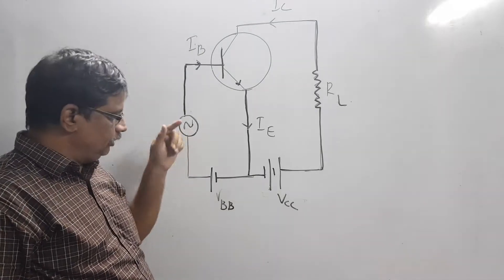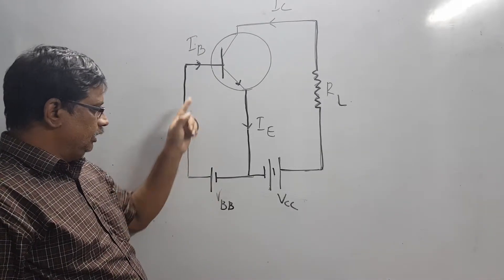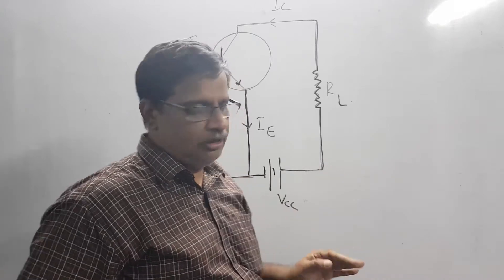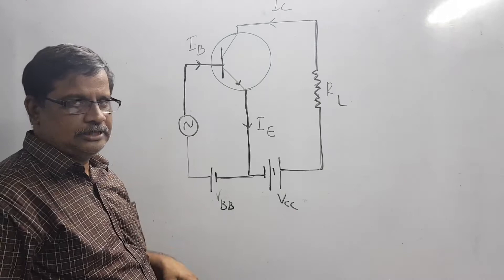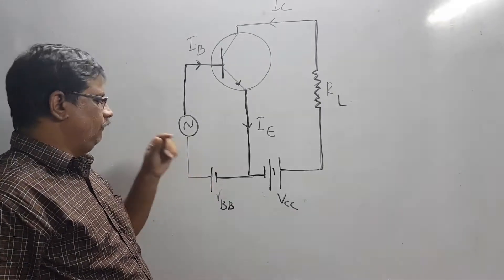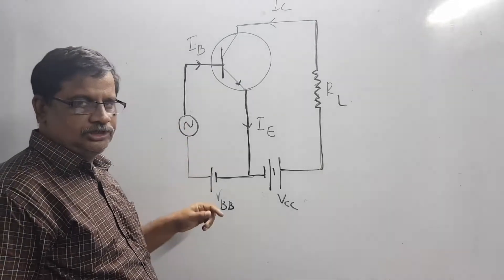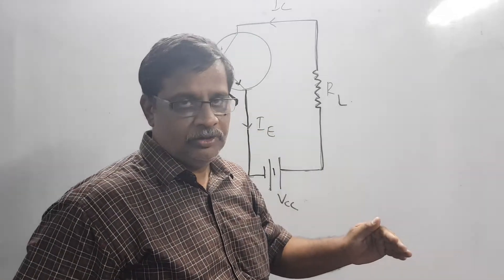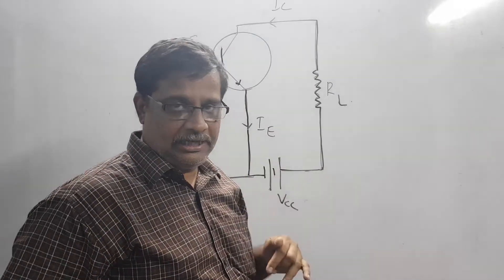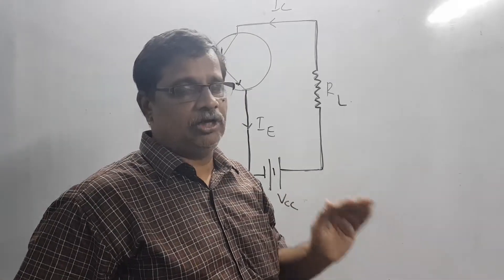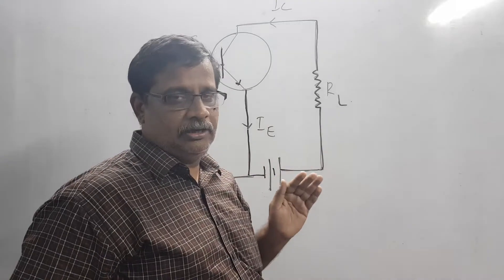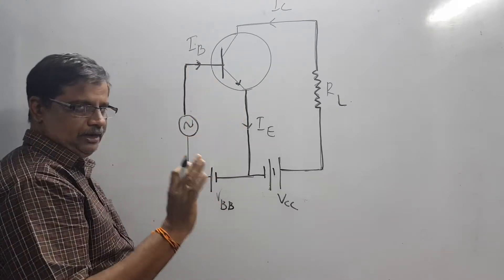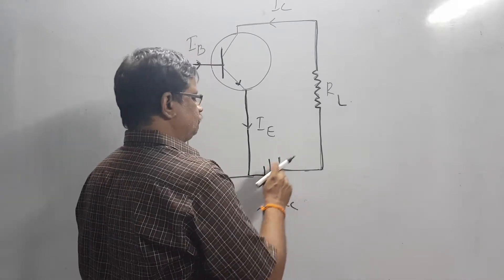Only one half-cycle would be amplified — such a thing should not happen. Under all conditions of the input signal, the base-emitter junction should be properly forward biased, and for that purpose we use this battery. During the positive half-cycle there will be more forward biasing so more collector current flows; during the negative half-cycle the forward biasing will be a little less, but the junction will still remain forward biased, so the collector current will simply decrease slightly.